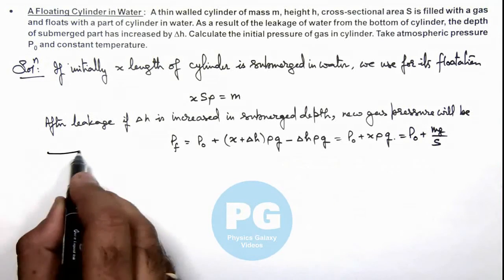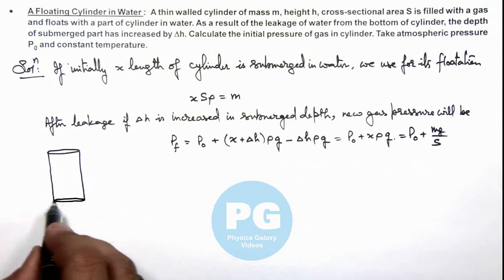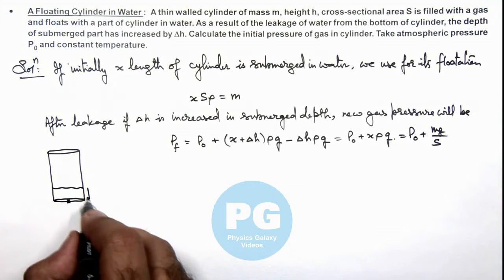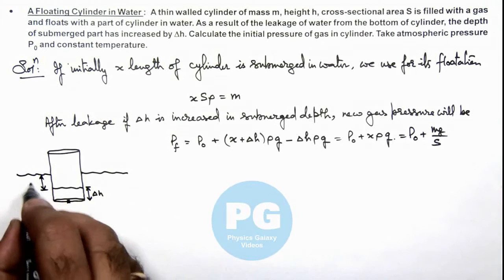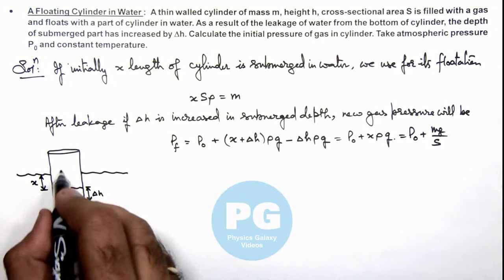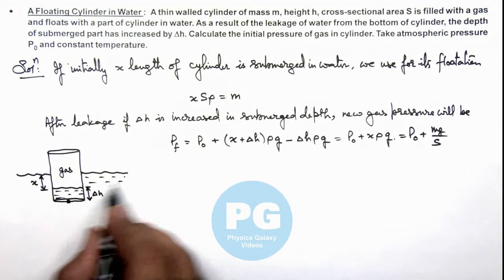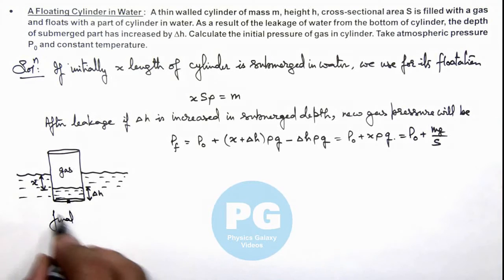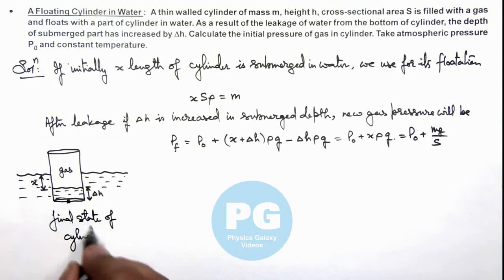Here you can also analyze it with the help of a diagram for better clarity. This is the final state when a hole is there at the bottom and liquid level rises up by a distance delta h. Outside the water level is at a height x above this water level. Initially when there was no water inside the cylinder, the cylinder was floating at a depth x below the water level. So this is the final state of cylinder in floating state.